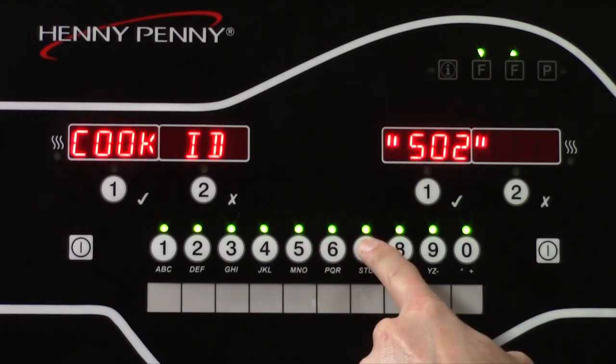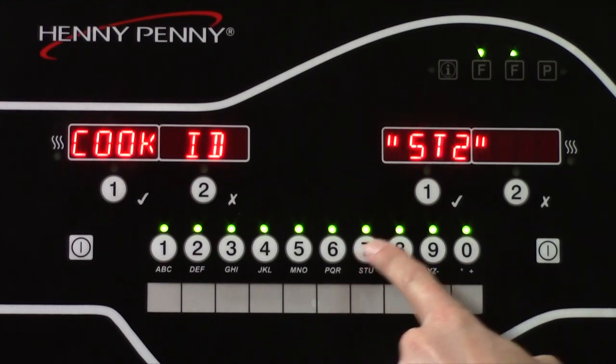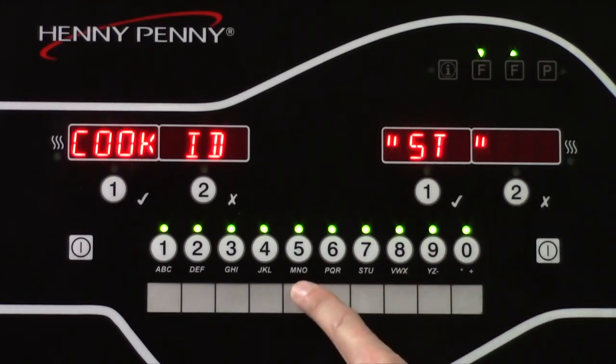The cook ID is a three-letter abbreviation that appears in the three-digit timer display. For our example, we're going to set this to STP, abbreviation for strips.